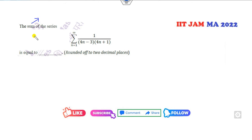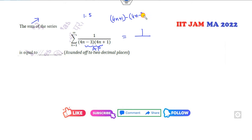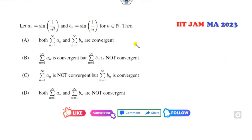Look at the next series sum. This denominator is an AP: if you substitute N=1, you get 1; N=2 gives 5, and so on — these are 4N−3, with common difference 4. The next term is 4N+1. So once you write it in AP form, the sum of the series is 1 over the common difference = 1/4.